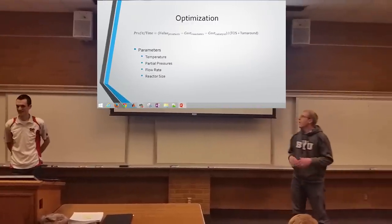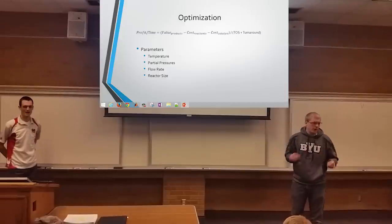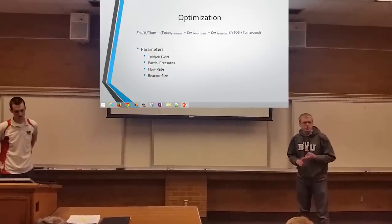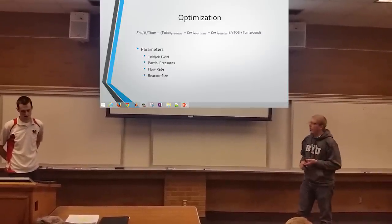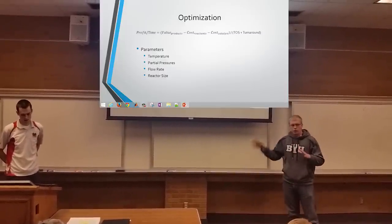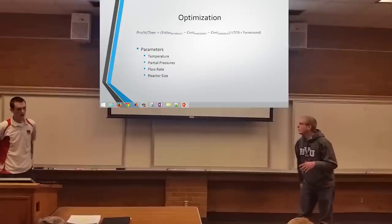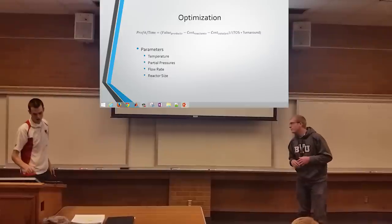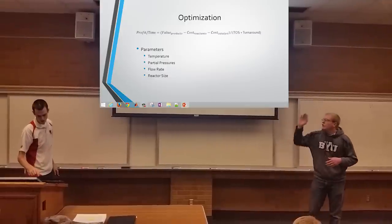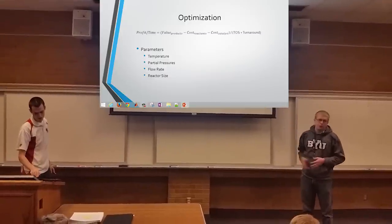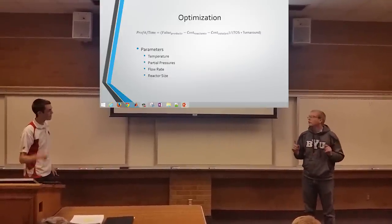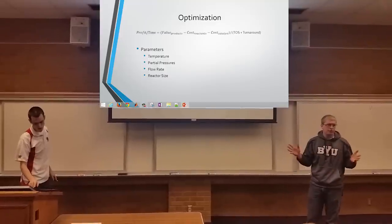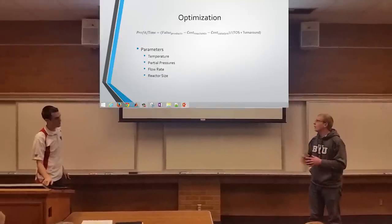We would optimize profit versus time by accounting for the value of the products, the cost of the catalyst, and the cost of the reactants, all divided by the period of time that we would be running the reactor. Out of all these parameters, we chose to only adjust the partial pressures of hydrogen and CO for simplicity for this project.